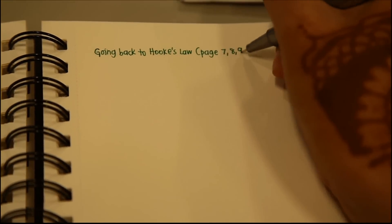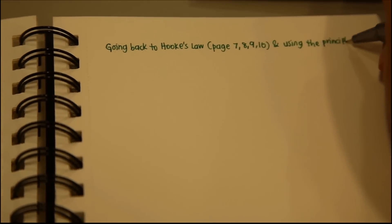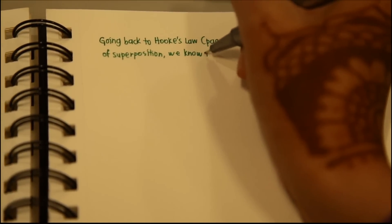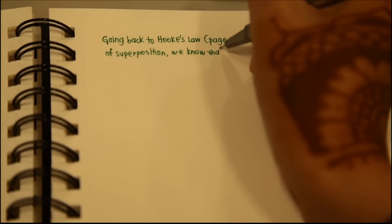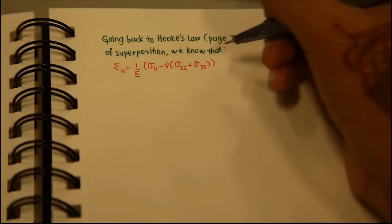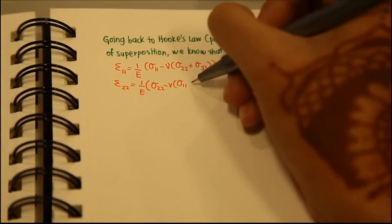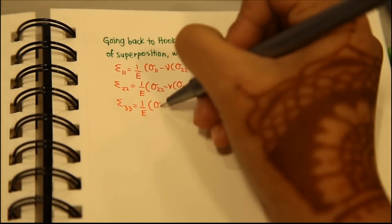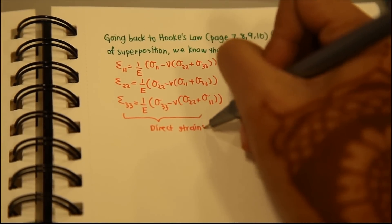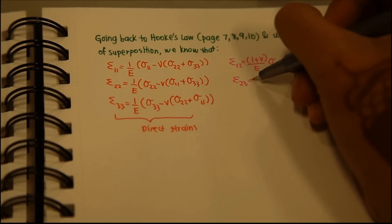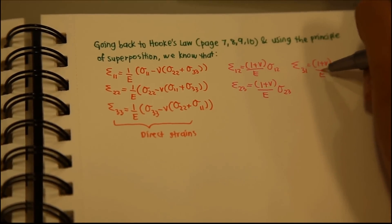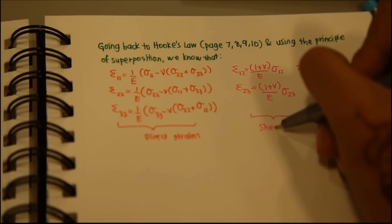The question can be solved from a mechanical point of view. First, recalling Hooke's law and using the principle of superposition, we get expressions for the direct strains epsilon 1,1, epsilon 2,2, and epsilon 3,3, and the shear strains epsilon 1,2, epsilon 2,3, and epsilon 3,1.